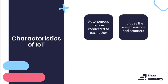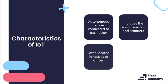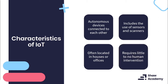IoT also includes various sensors and scanners — this could be temperature sensors, cameras, or infrared sensors. It really all depends on the kind of data you're trying to retrieve and what your intention is with that data. We would tend to use IoT in offices, home spaces, and even outdoors like on farms. It all boils down to what information you want to retrieve. And as mentioned, it requires little to no human intervention because everything is autonomous and software driven.